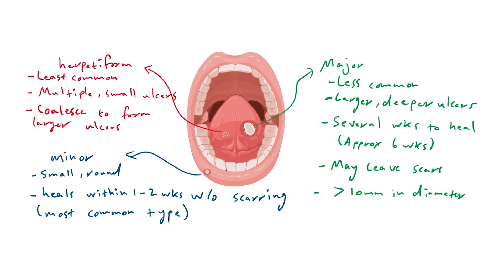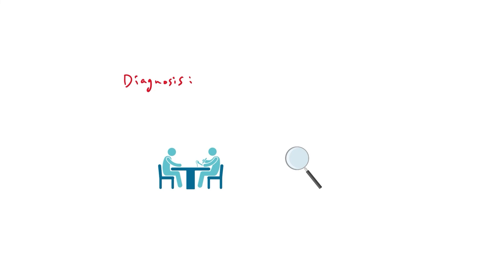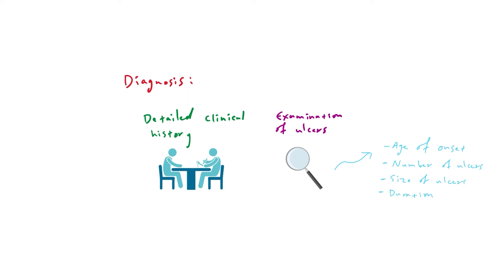These ulcers are also found on the floor of the mouth. The correct diagnosis of RAS is dependent on a detailed clinical history and examination of the ulcers. This includes assessment of age of onset, number of ulcers, size, duration, presence of scarring, and site.